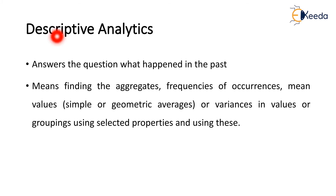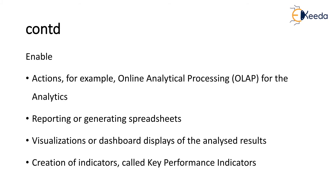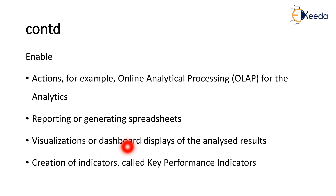Descriptive analytics answers the question: what happened in the past? It means finding the aggregates, frequencies of occurrences, and mean values — whether simple or geometric averages — or variances in values, or groupings using selected properties. Features that enable actions include online analytical processing, reporting or generating spreadsheets, visualizations or dashboard displays of the analyzed results, and creation of key performance indicators (KPIs).